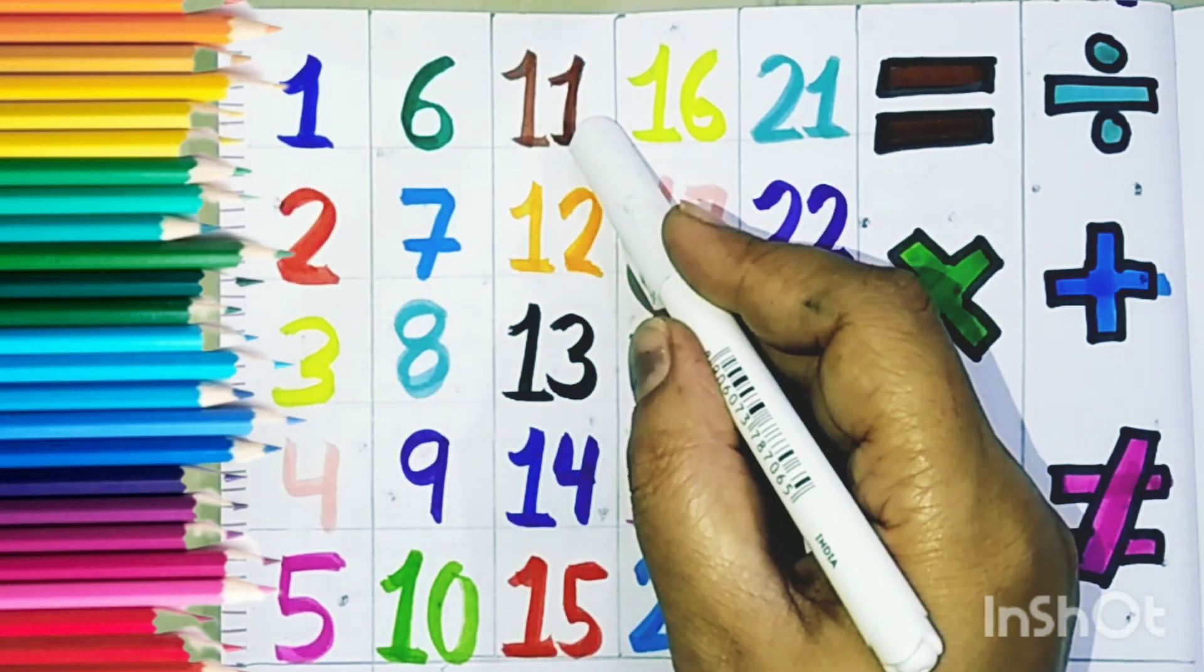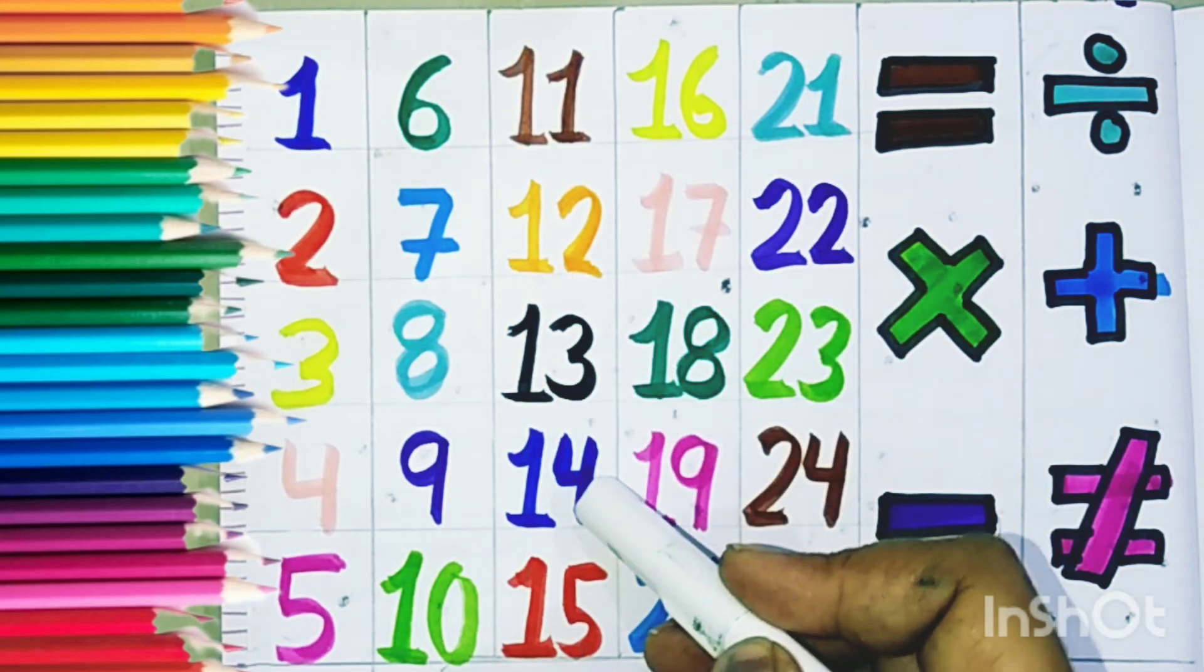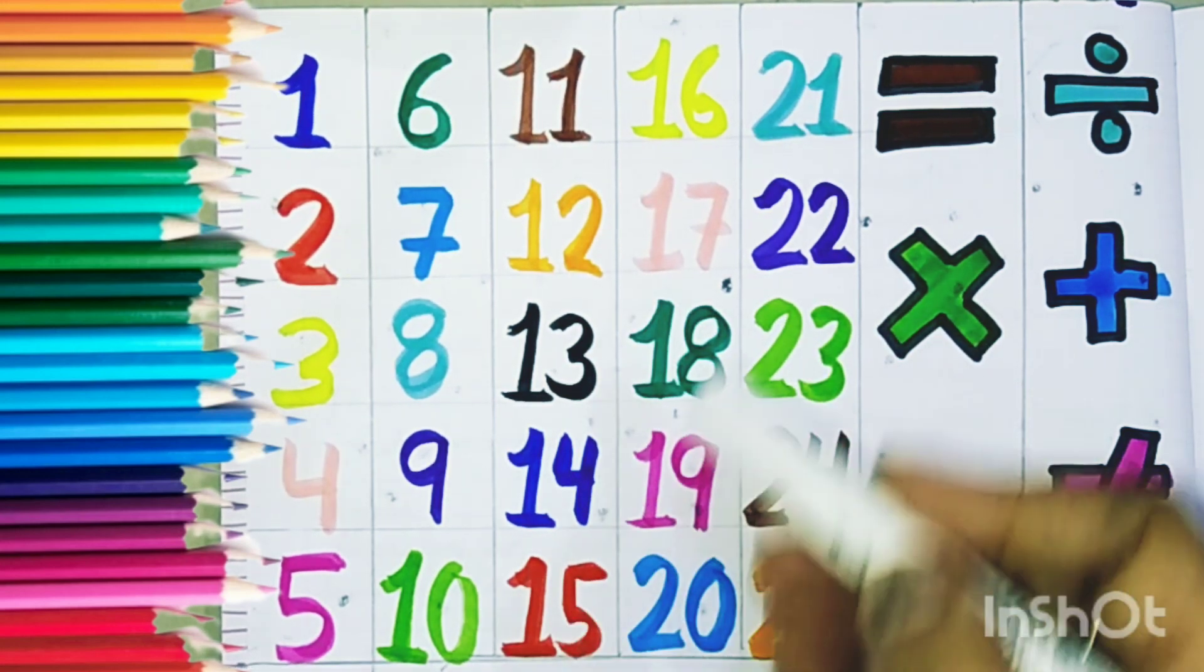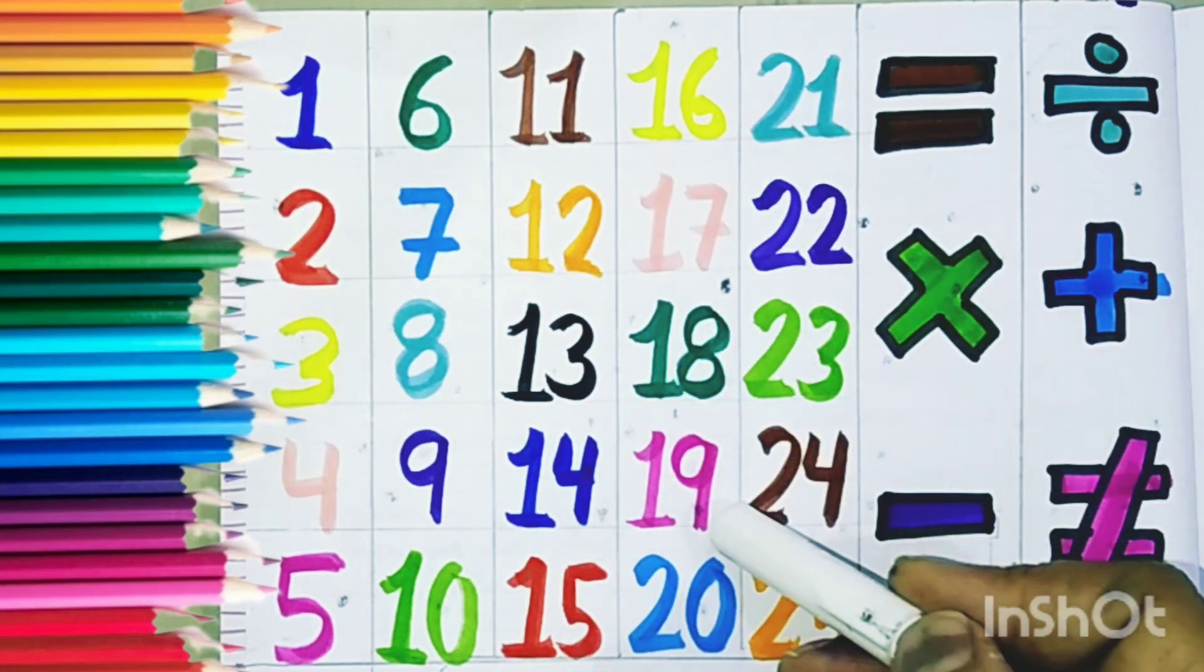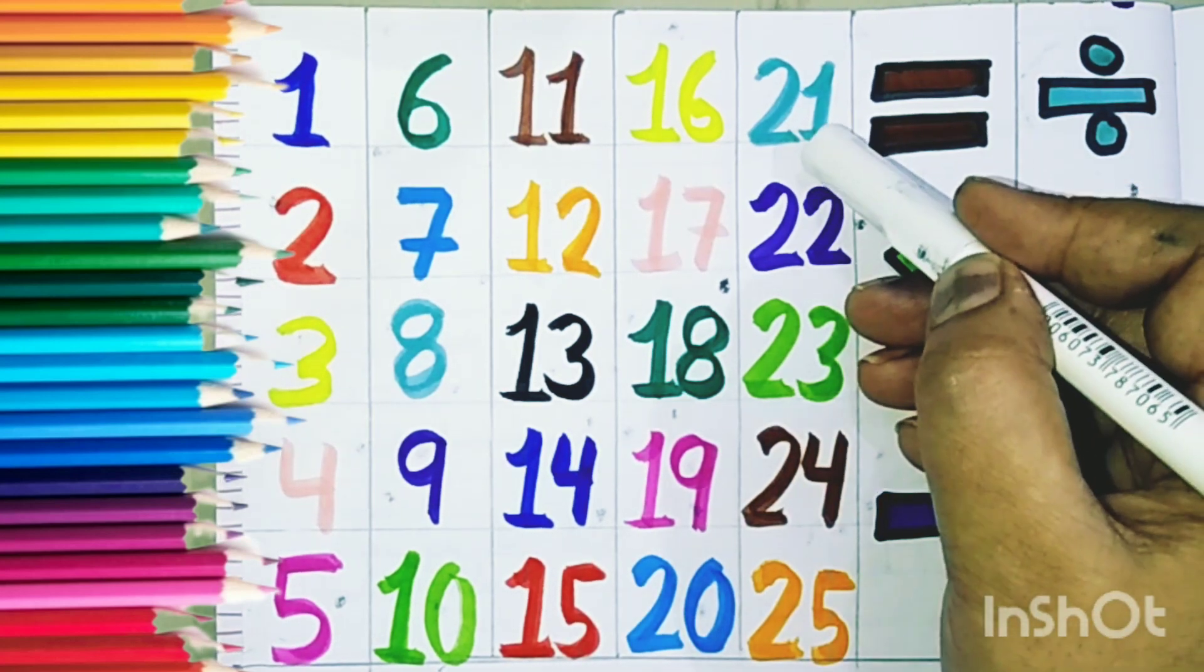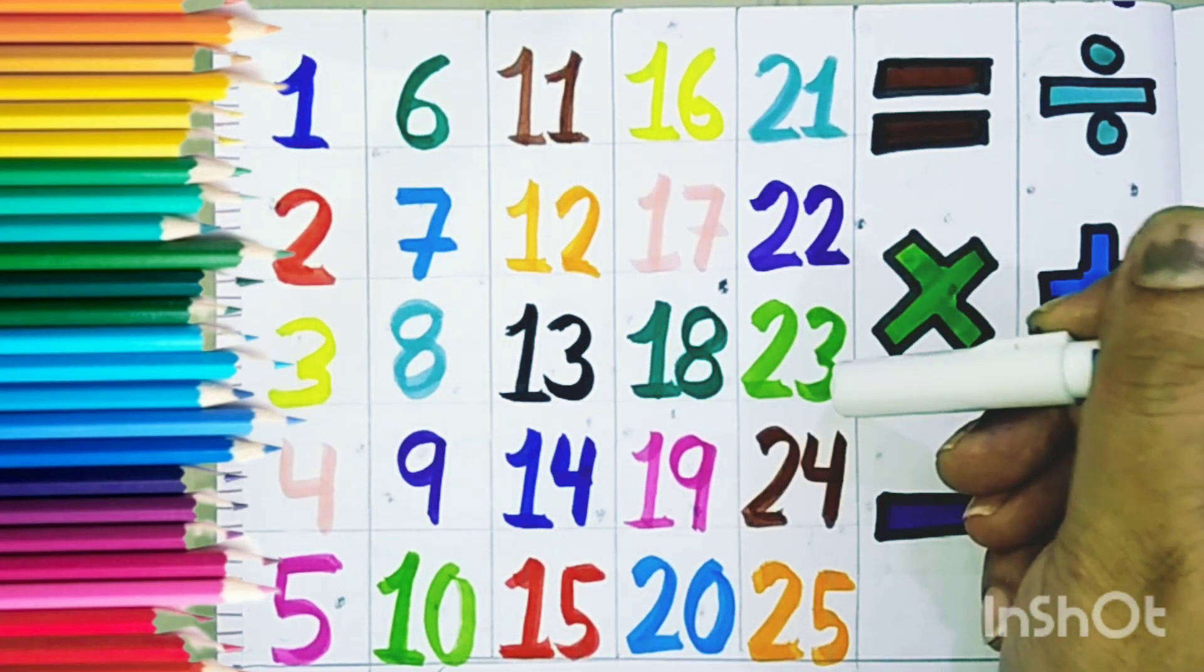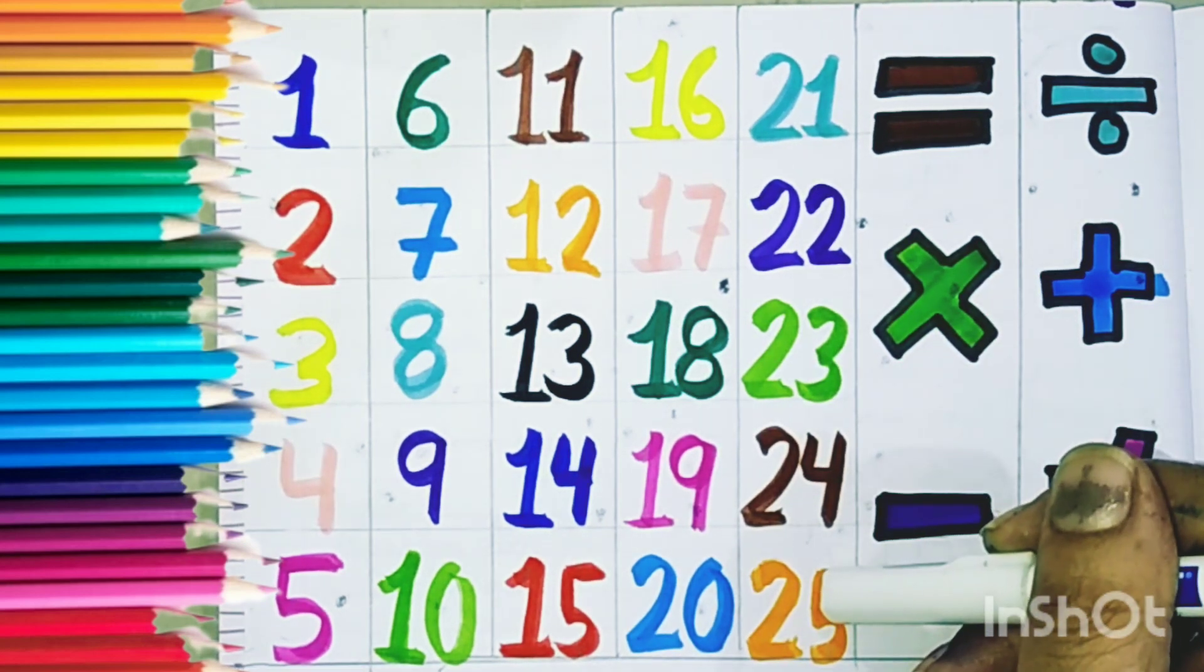11, 12, 13, 14, 16, 17, 18, 19, 20, 21, 22, 23, 24, 25.